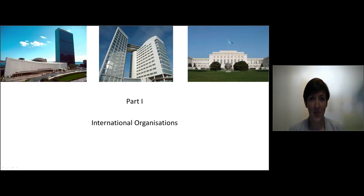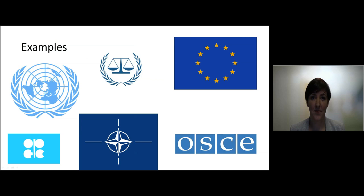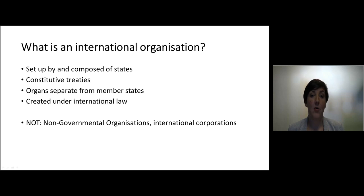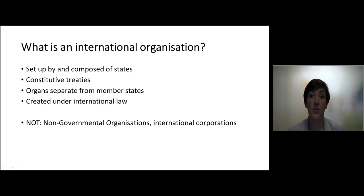First, the international organizations — and perhaps you recognize the buildings which house some of the most well-known international organizations, and perhaps you recognize these logos of international organizations; you notice immediately that they apparently like the color blue. So what is an international organization? They are being set up by and composed of states. They have a certain treaty made by the states through which they are established, and in this treaty the main powers and duties of the international organization are laid down.